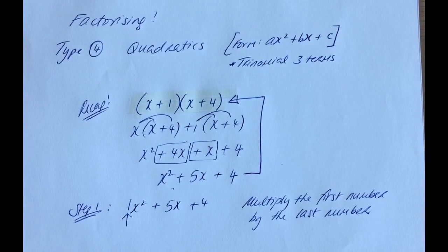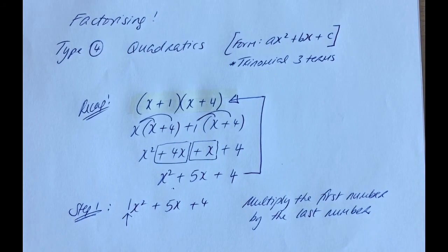Because if it was 2x squared, the 2 would definitely be there. And if it was 5x squared, the 5 would be there. If it's just x squared on its own, it's just 1. There's 1x squared.